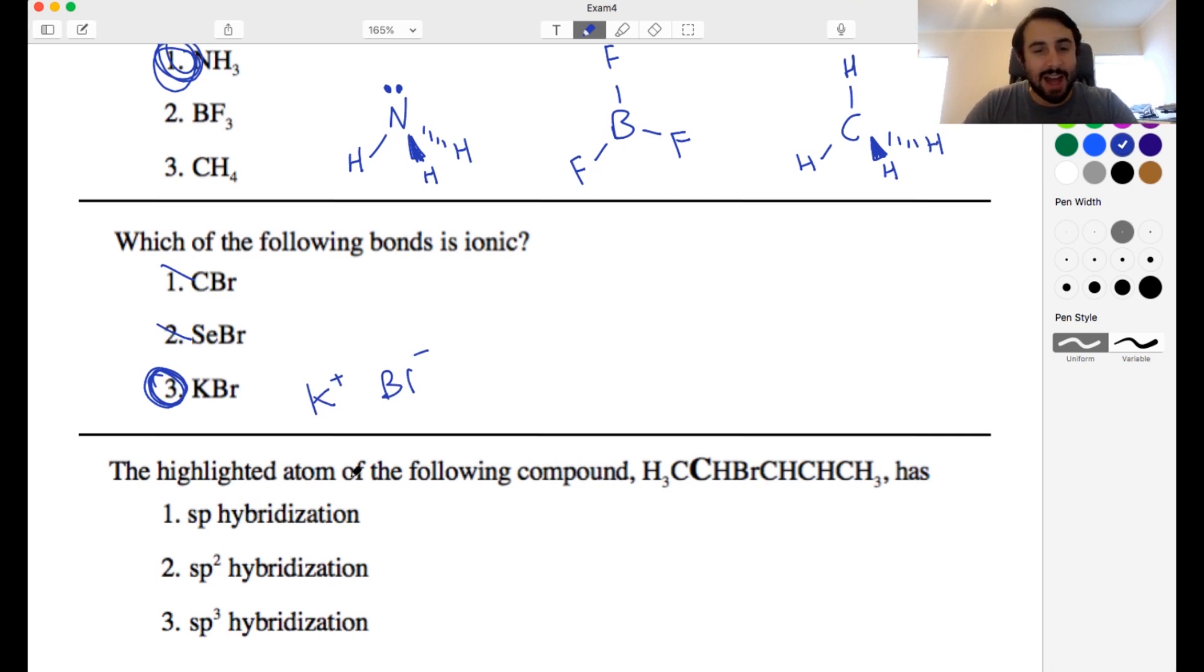Now the highlighted atom of the following compound has, and we're gonna pick the hybridization. So whenever we see anything written out in condensed formula notation like this it's always a good idea to write it out explicitly in line notation because it can be very confusing. We don't see what kind of bonds there are: single bond, double bond, triple bond, etc.